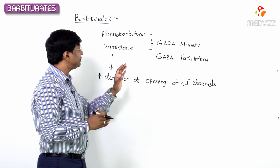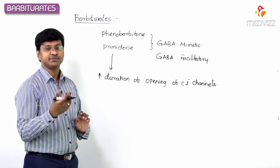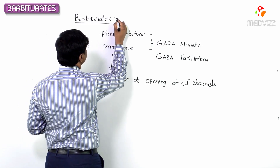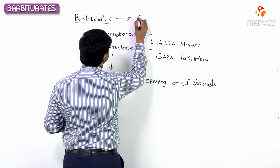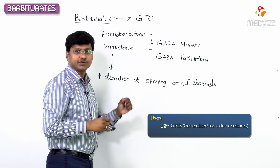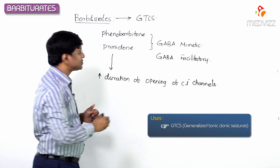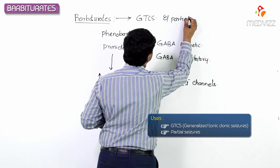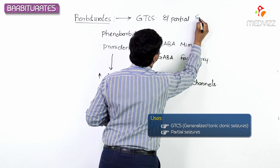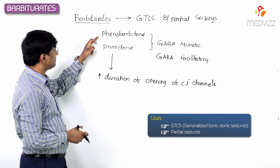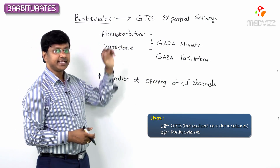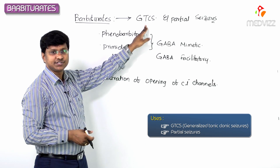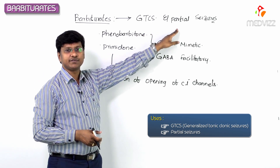Regarding which type of epilepsy these drugs are used in: phenobarbitone and other barbiturates can be used in generalized tonic-clonic seizures and can also be used in case of partial seizures.